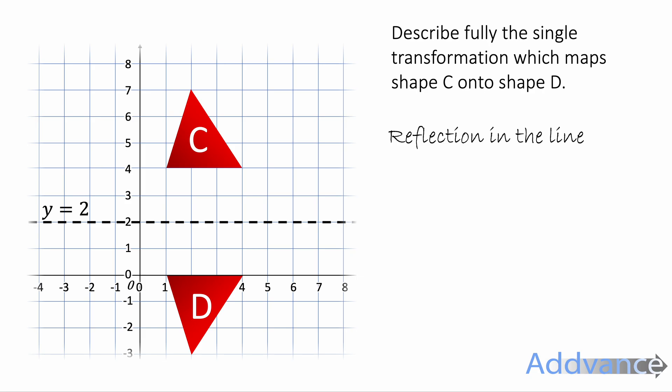When you're in the exam you would probably want to draw that line first and then afterwards figure out what the equation of that line is. And so we say reflection in the line Y equals 2 for two marks. One for saying reflection, one for saying Y equals 2.